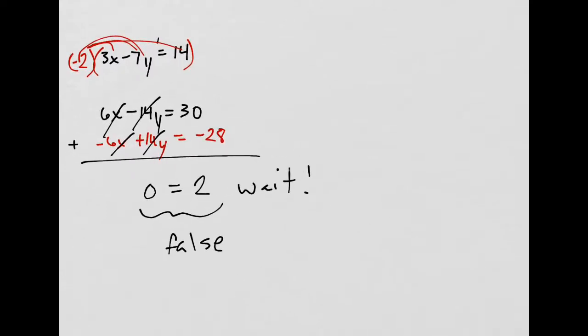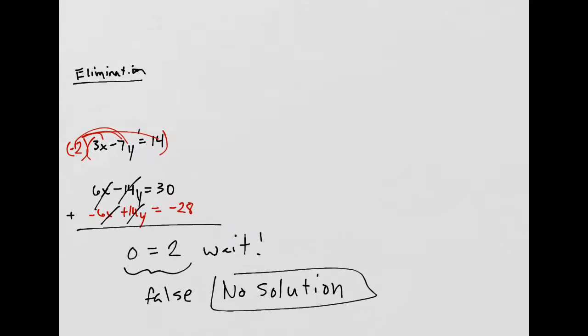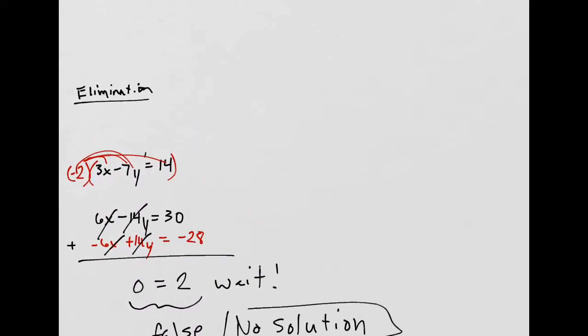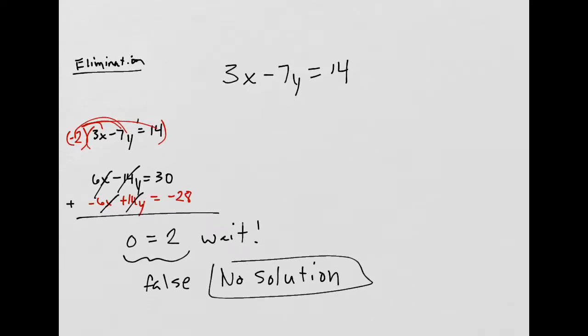This is false. Thus, our answer is no solution. No solution. Wait a minute, why do we say that? What the heck? Well, if I graph these, let's look at our original equations again. Maybe not graph them, but I'll look at their slopes.